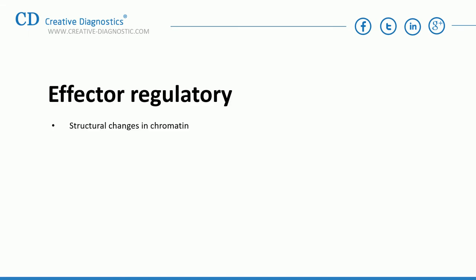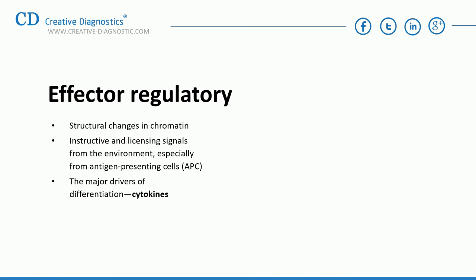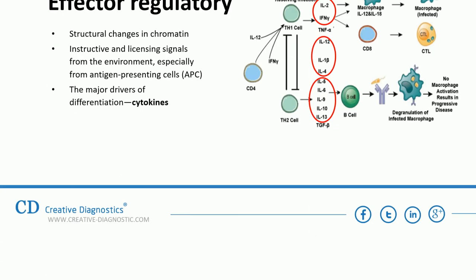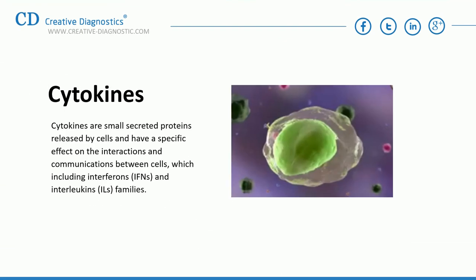Differentiation is regulated by structural changes in chromatin and is also directed by instructive and licensing signals from the environment, especially from antigen-presenting cells. It is widely believed that cytokines are the major drivers of differentiation. Cytokines are small secreted proteins released by cells that have specific effects on interactions and communications between cells, including interferons and interleukins families.